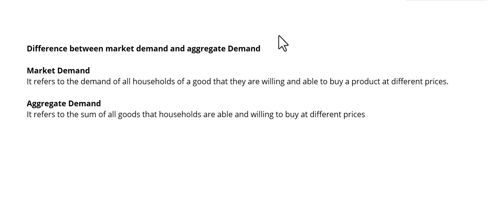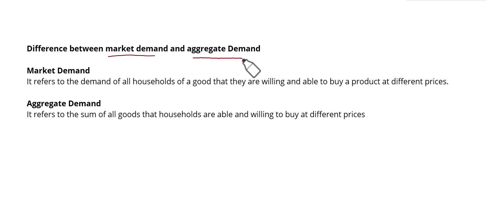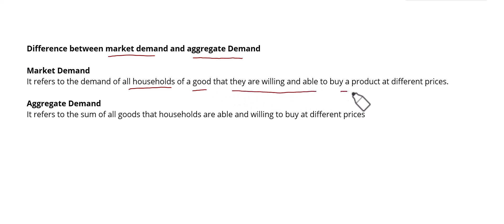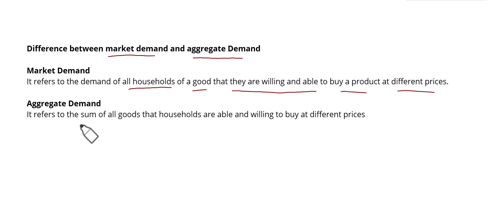Welcome to today's lecture. We are going to discuss the difference between market demand and aggregate demand. Most students think that market demand and aggregate demand are the same thing, but they are not. Market demand refers to the demand of all households for a single good that they are willing and able to buy at different prices, and it is a microeconomics phenomenon.